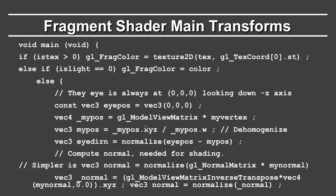Here are the main transformations in the fragment shader. If isTex is greater than zero, then the fragment color is the result of texturing, and in that case we ignore the lighting. If isLight is zero, then again you return. The eye in OpenGL is always at the origin looking down the minus Z axis — that's a standard convention. Therefore we set the eye position to the origin. Then myPos is the model view matrix times my vertex, giving the vertex location in eye coordinates. I then de-homogenize it, so I have a 3D location. Then I find the direction to the eye, which is simply the eye position minus myPos, normalized.